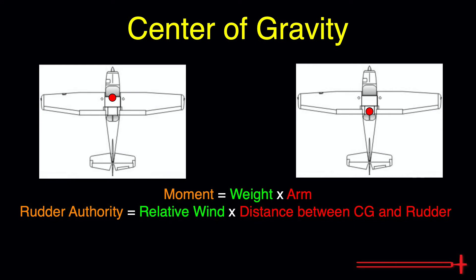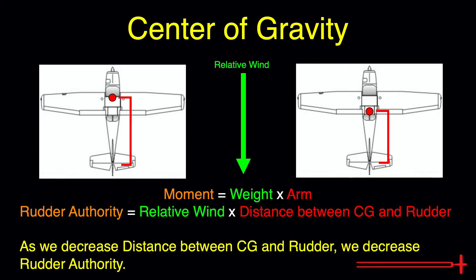Assuming both aircraft maintain the same speed, the relative wind will remain constant. As we decrease the distance between CG and the rudder by moving our CG aft, we reduce the arm. The result will be a decreased moment or decreased rudder authority. This is why rudder authority decreases as we move the center of gravity aft.